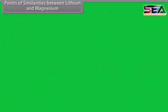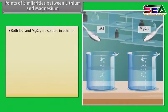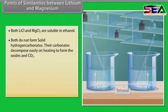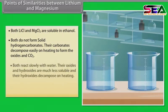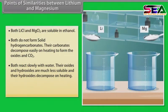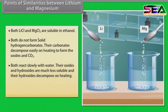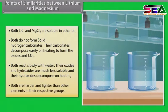Both LiCl and MgCl₂ are soluble in ethanol. Both do not form solid hydrogen carbonates. These carbonates decompose easily on heating to form the oxides and CO₂. Both react slowly with water. Their oxides and hydroxides are much less soluble, and their hydroxides decompose on heating. Both are harder and lighter than other elements in their respective groups.